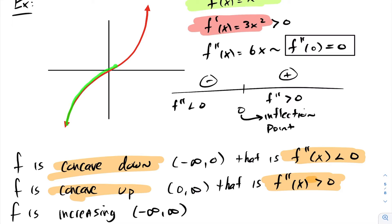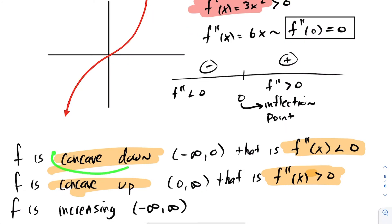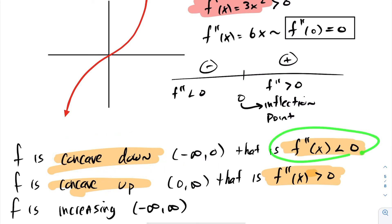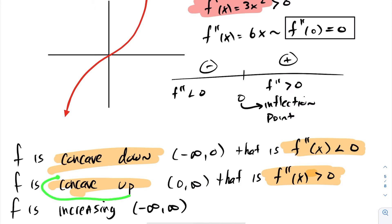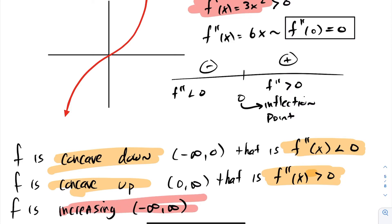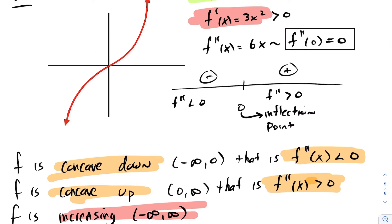Visually, we can see the function is always increasing. So in summary: the function is concave downwards on the interval negative infinity to zero, with f double prime less than zero. The function is concave upwards on the interval zero to infinity, with f double prime greater than zero. And lastly, our function f is increasing across the entire interval, as its first derivative is greater than zero.